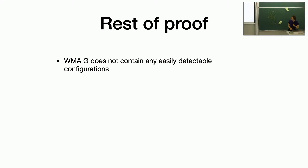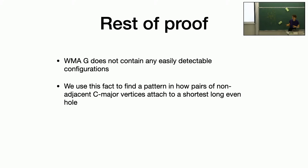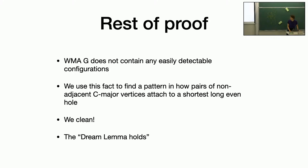Just a quick sketch of the rest of the proof: we can assume it doesn't have any easily detectable configurations, and once we have that structure we're able to get a similar pattern as what we found for the prism case, for C-major vertices in a shortest long even hole. We can get a bound on that size and do cleaning. Once we have that, the dream lemma holds. The proof of that is actually pretty straightforward — a little bit long, but the most obvious things you can think of at every point work.